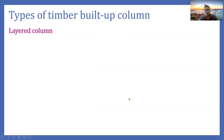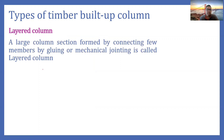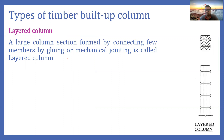There are different types of built-up column used in timber structures. One very important type is the layered column. A layered column is basically composed of planks — three planks of more or less similar thickness — which are clamped or glued together. Clamping can be done with bolting or by gluing. These columns are known as layered columns.